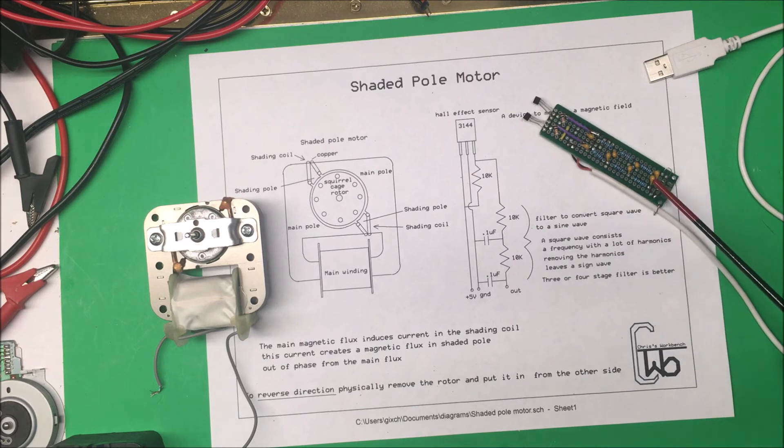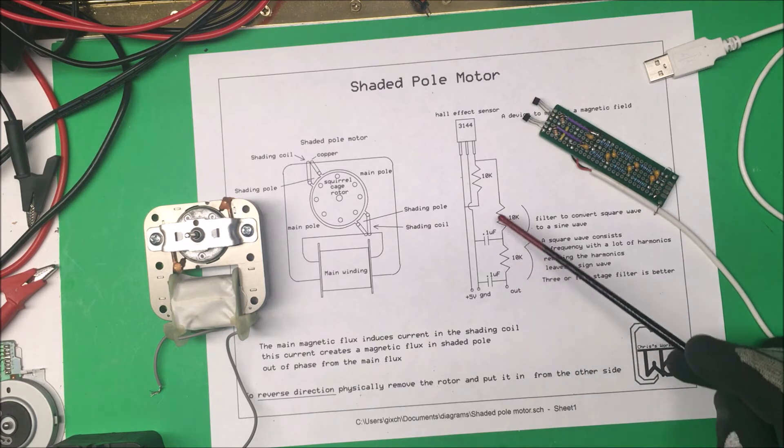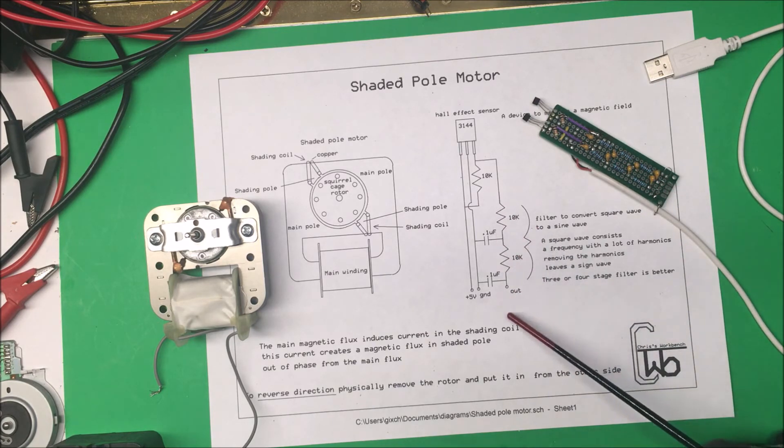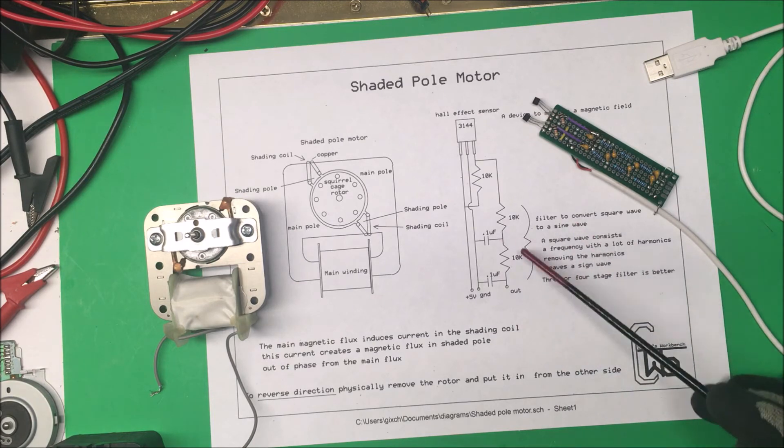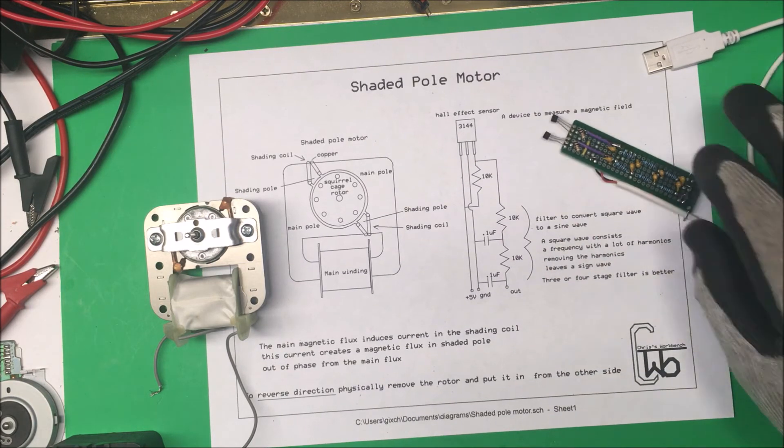I started off with two, but I ended up putting three stages on here. I'll show you what it looks like on the scope. Even four stages would look better, but if you keep adding stages here, you can get a better sine wave. That's how I measured it.